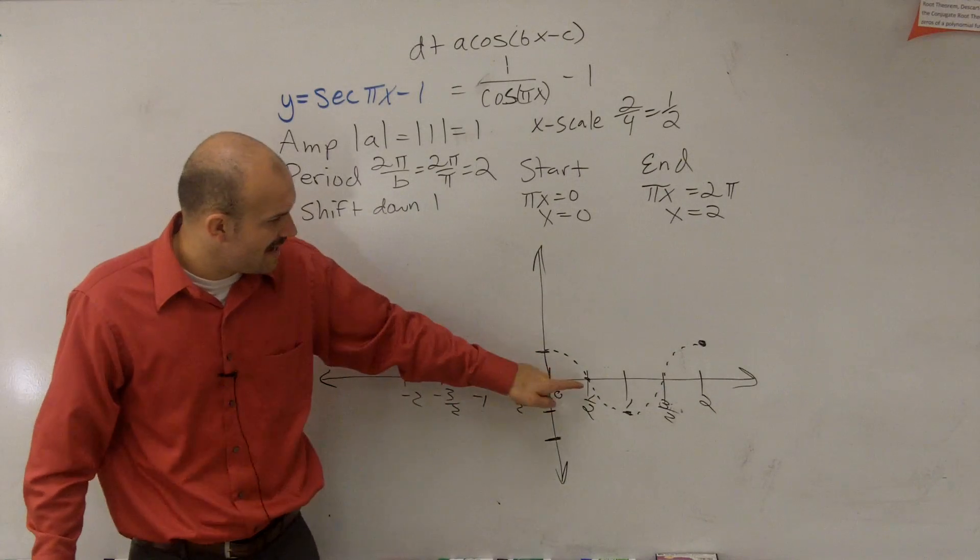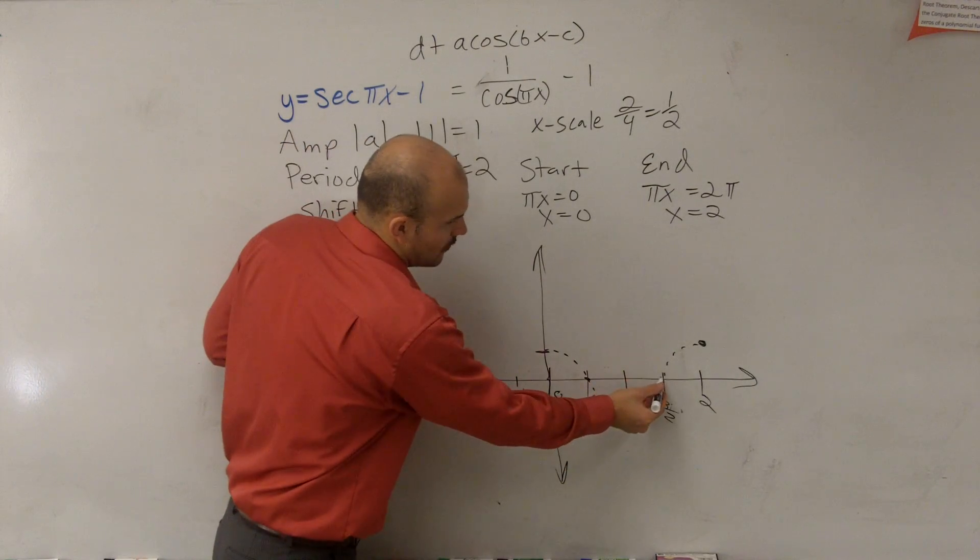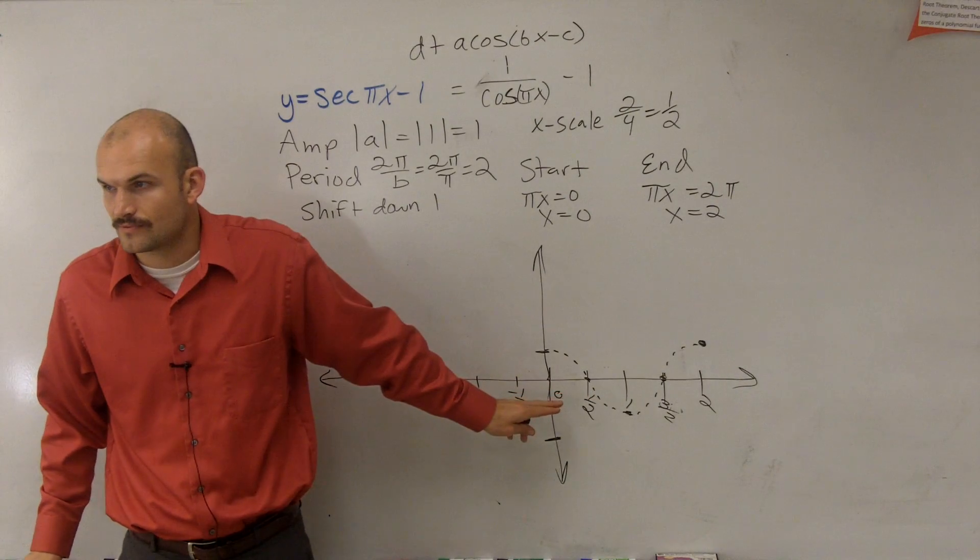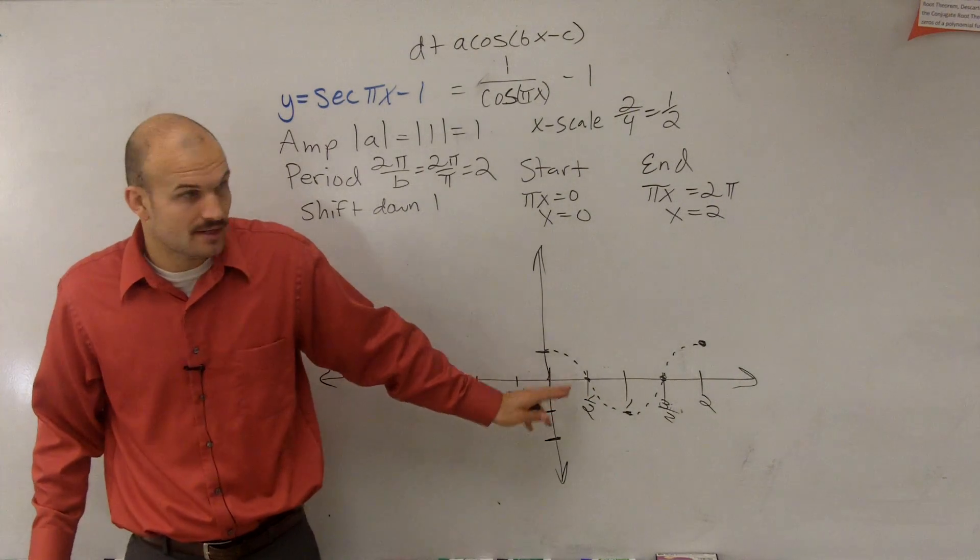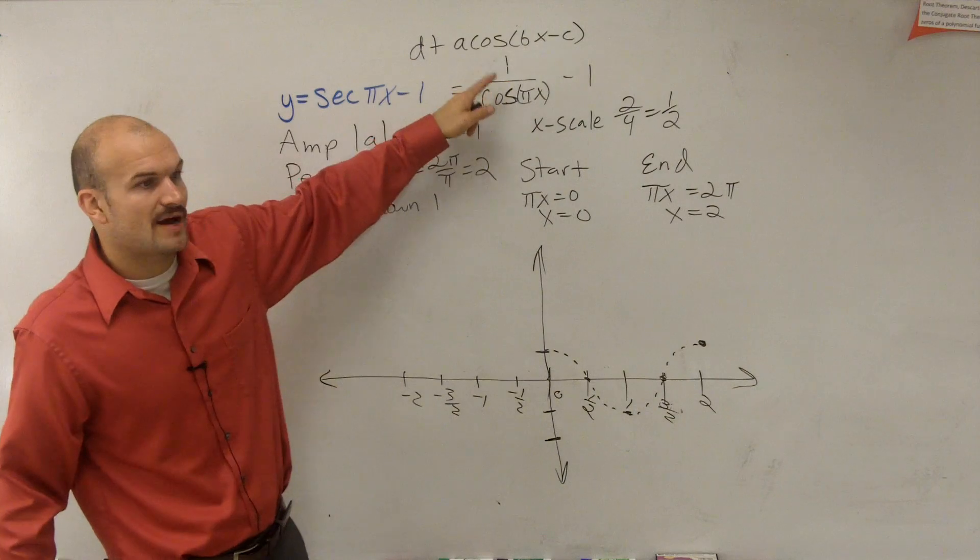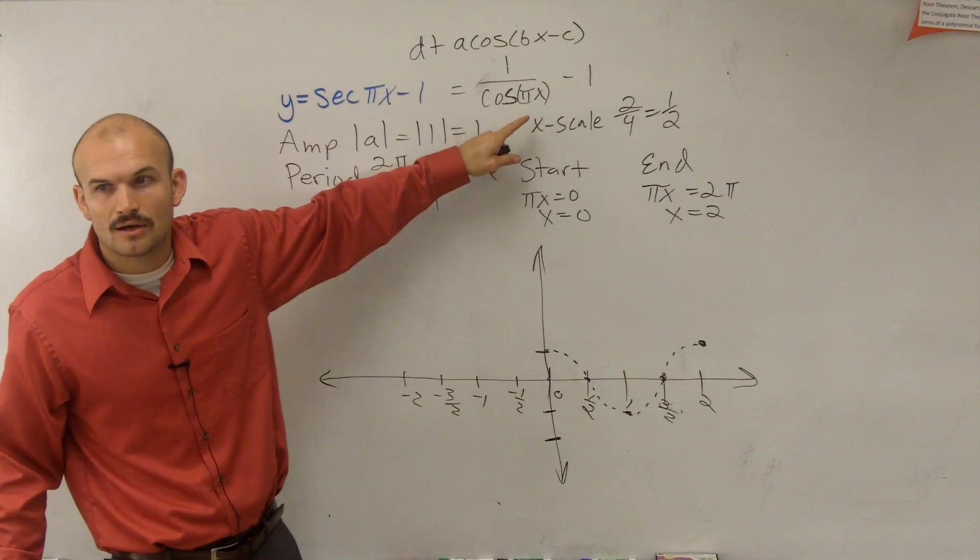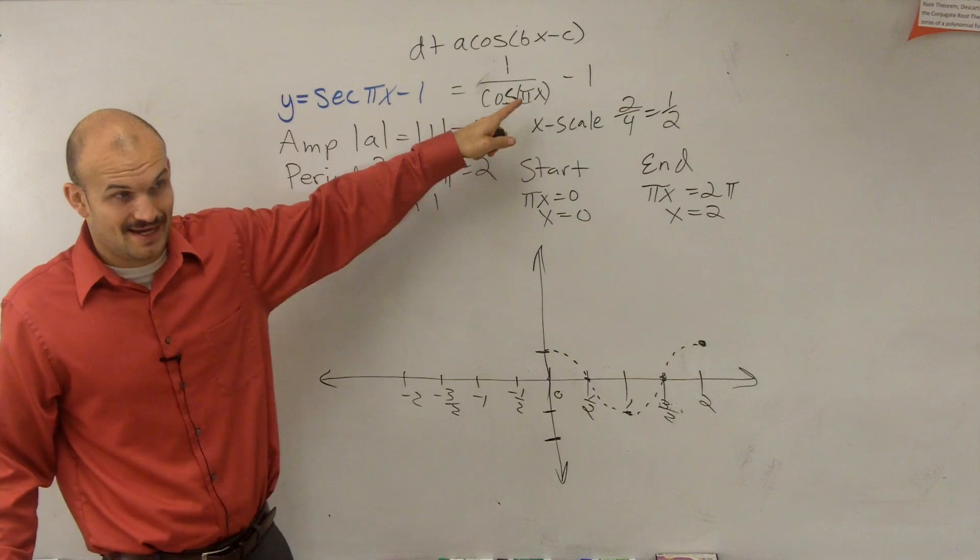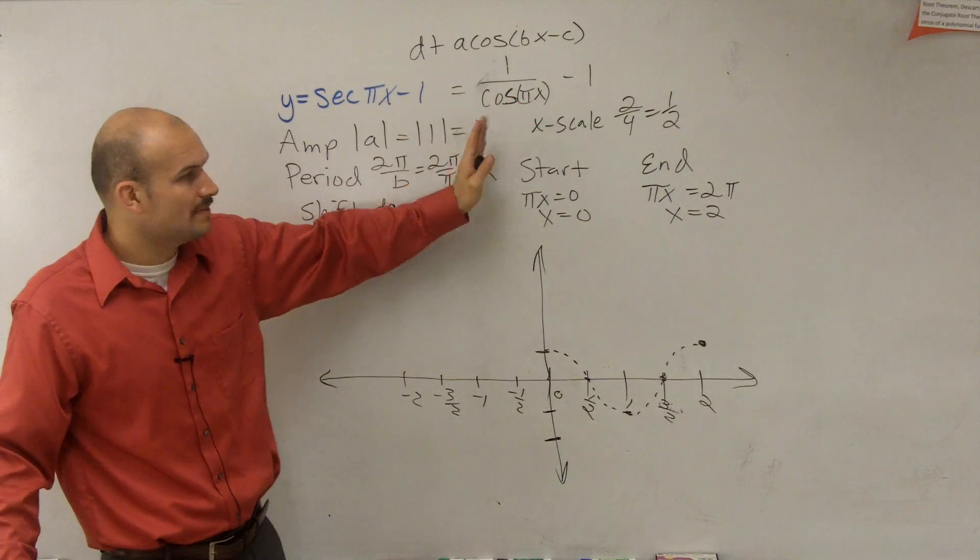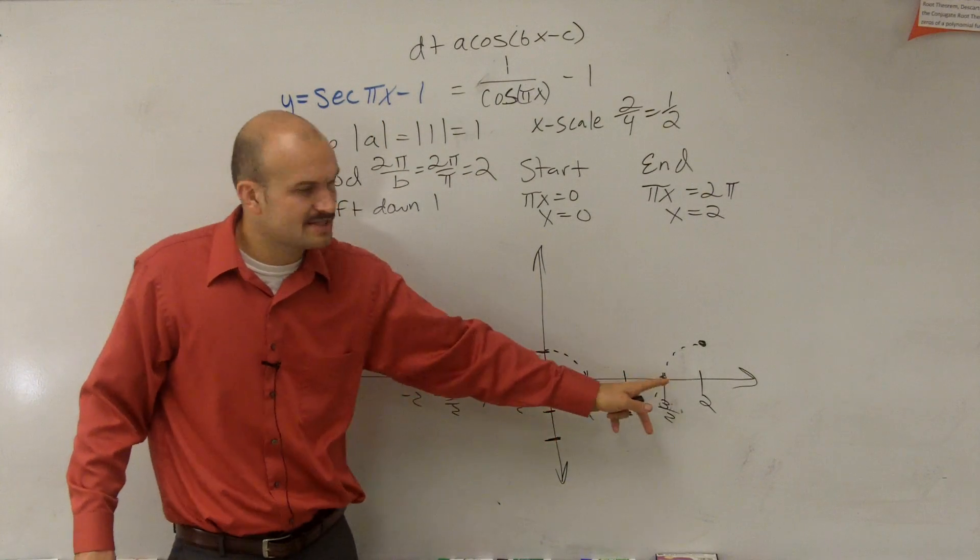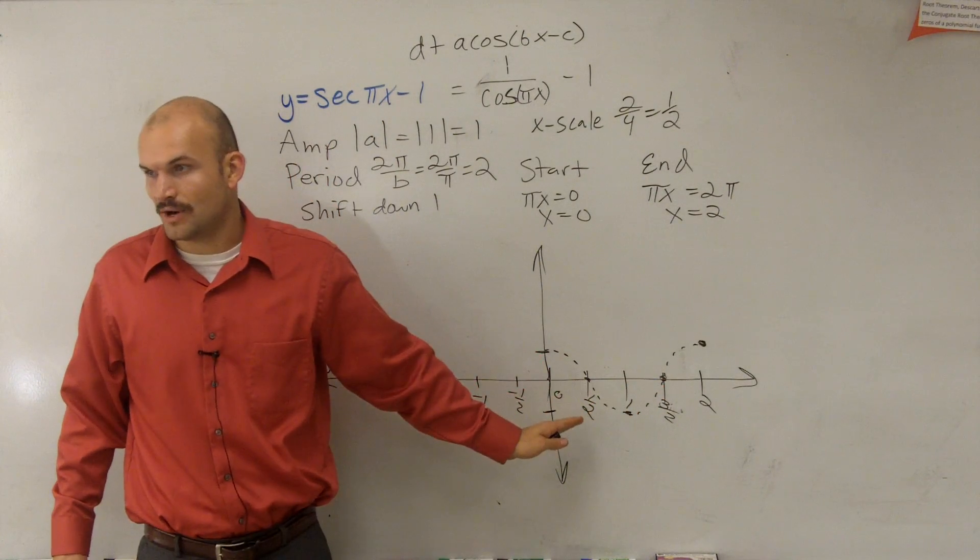One thing I want you guys to notice. At each one of these points, at 1 half and 3 over 2, what is the value of my function? 0, right? So if you look at this function, if I put 1 over 0, 1 over 0 is undefined. You can't divide by 0. So one thing we want to notice when we're graphing the secant function is at each one of these x-intercepts, it's undefined.